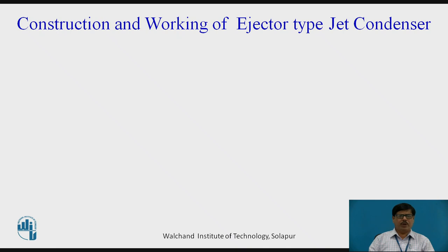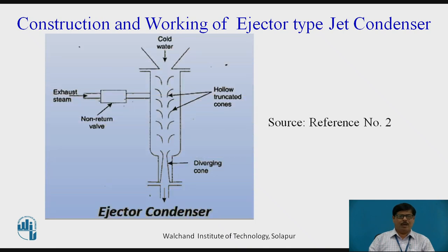Now let us see the construction and working of ejector type of jet condenser. In this figure, we are seeing an ejector type of condenser. The momentum of cooling water is used for ejecting or throwing out the condensate and air in this condenser. We can see that there is a central hollow tube in which hollow truncated cones, which we can also call as converging nozzles, are fixed. The cooling water at a head of around 5 to 6 meters is allowed to flow through these hollow truncated cones.